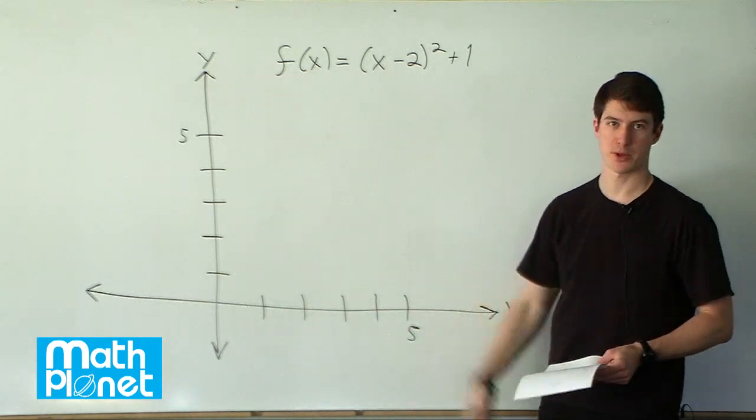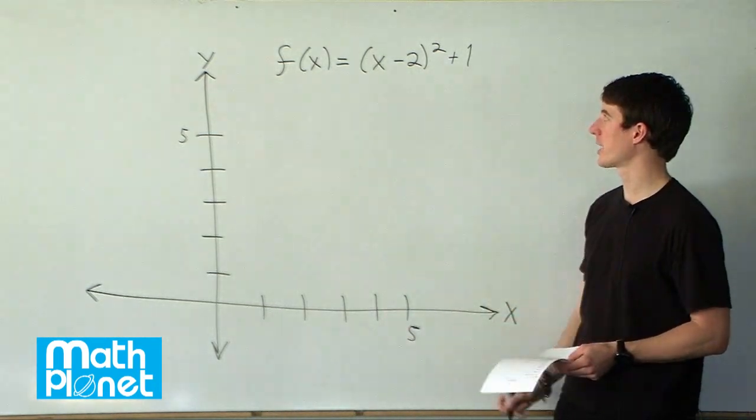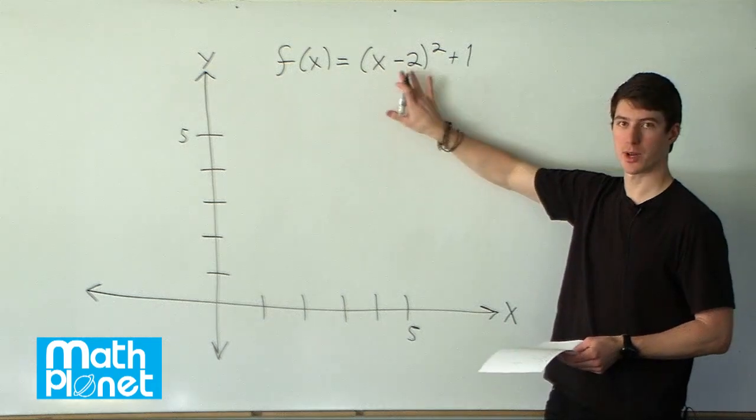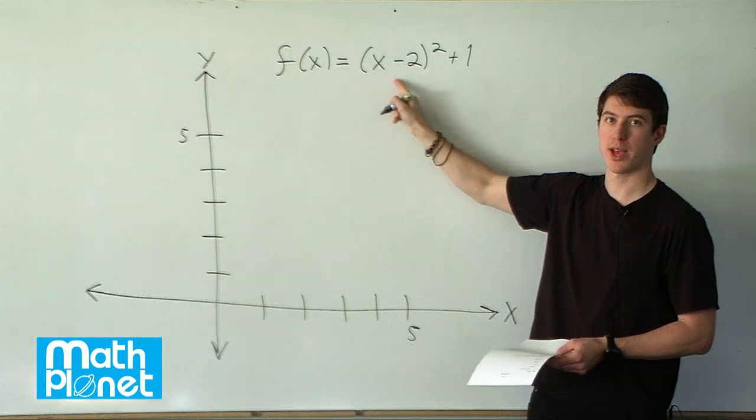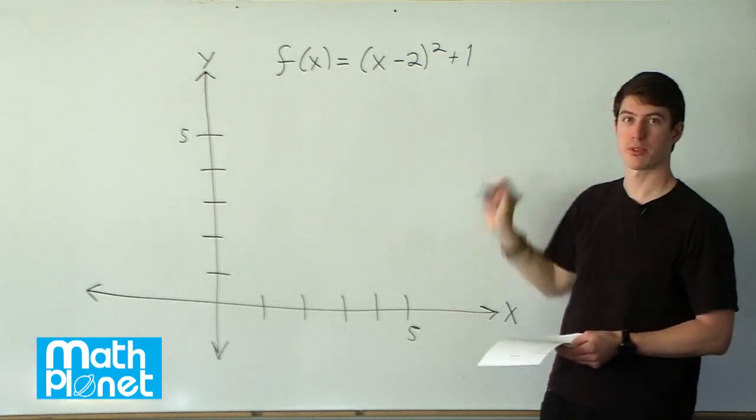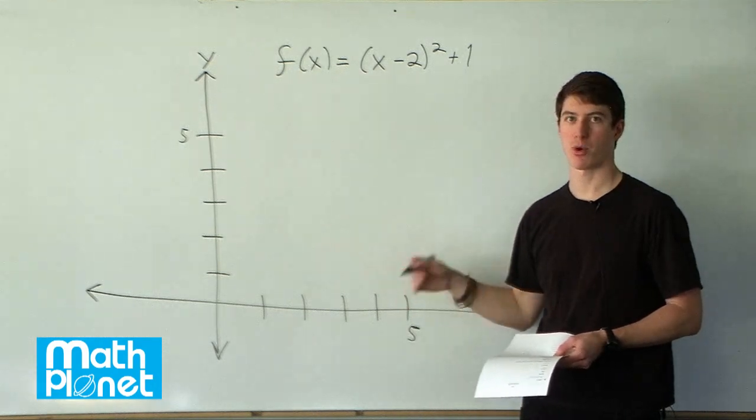This is a quadratic, so we have some special rules that let us find what it looks like almost exactly without having to guess. This is already written in the form that we like. If we have a quantity with the x squared plus some simple number, then we can find the vertex, or the minimum or maximum point, right away.